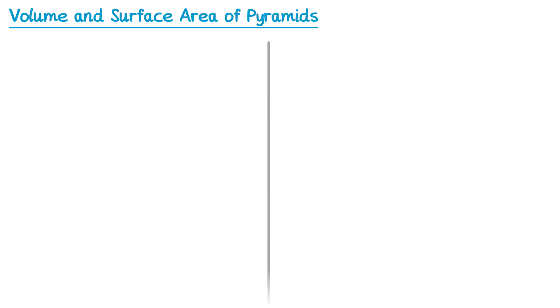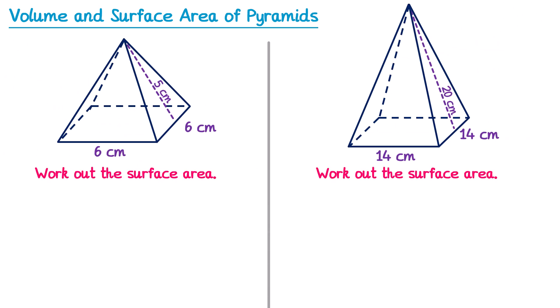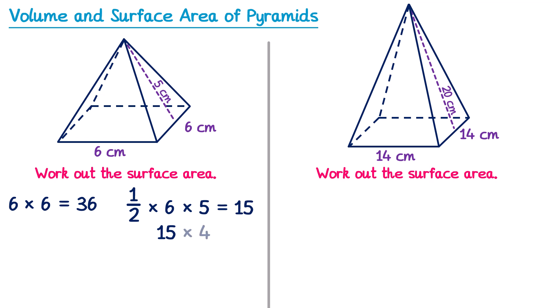Here are two more pyramids for you to work out the surface area. For the first one, the square base is 6 times 6, which is 36. Then one triangle: one half multiplied by the base, 6, multiplied by the height, 5, gives 15. Since there are four triangles, we multiply 15 by 4, giving 60. Adding 36 from the square base and 60 from the four triangles gives a total of 96 centimetres squared.